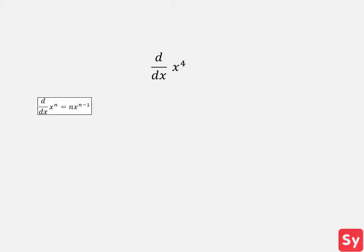This equals 4 times x to the 4 minus 1. We can simplify this to equal 4x to the 3rd, our answer.